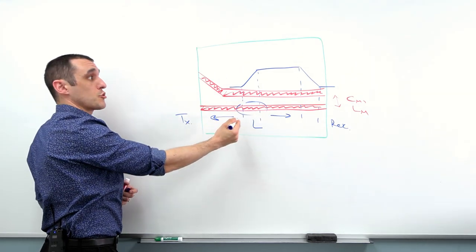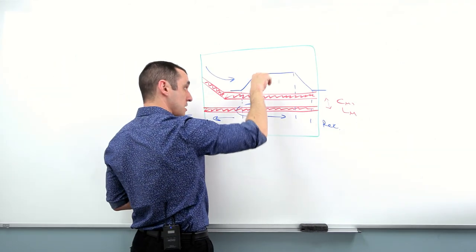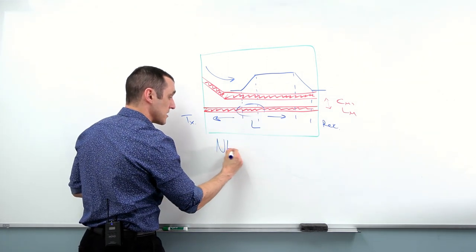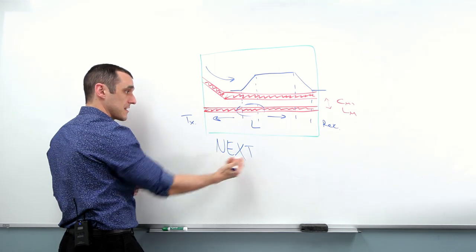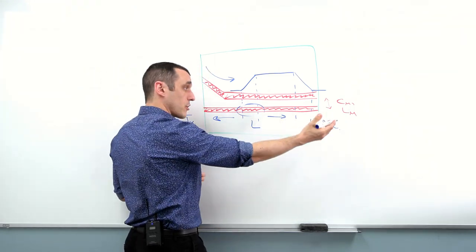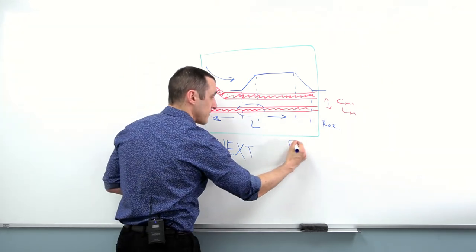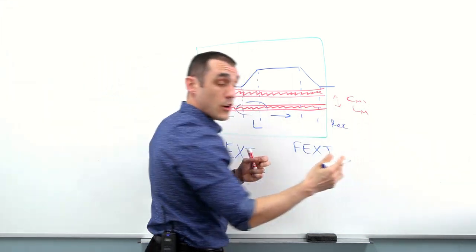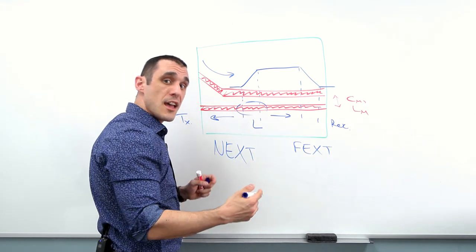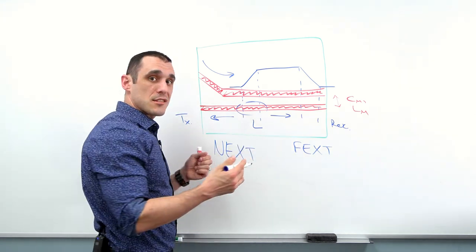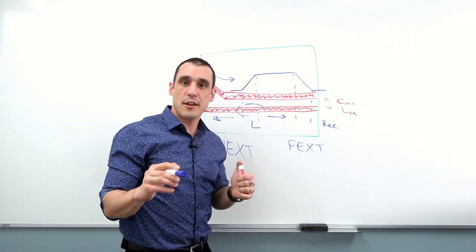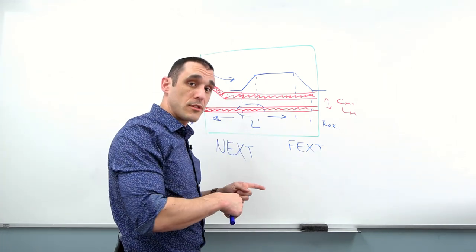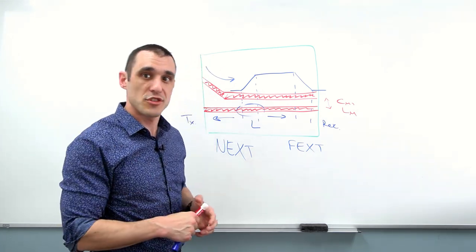The portion of crosstalk that travels backwards compared to the direction the inducing signal is traveling is called near-end crosstalk, or NEXT. The portion traveling forward is called far-end crosstalk, or FEXT. If you look at the capacitive and inductive contributions to each type, you can learn about how much crosstalk to expect. There are many guides on deriving NEXT and FEXT — what we'll do here is look at the result and discuss the implications.